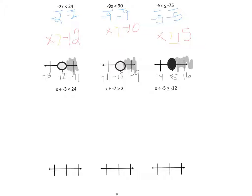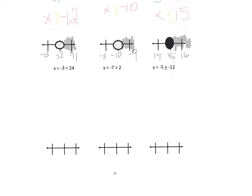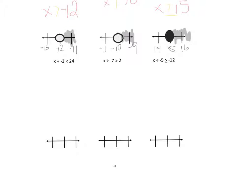The fourth one: x divided by negative 3 is less than 24. Since we are dividing, the inverse is multiplication, so we multiply both sides by negative 3. 24 times negative 3 is negative 72 — it's negative because the signs are different. Then our symbol flips. On the number line, this is an example of why you don't make really big number lines, since the numbers can get large. We shade everything to the right because it's greater than negative 72.